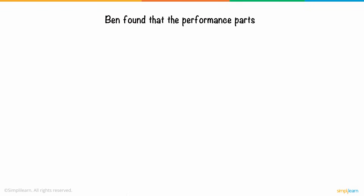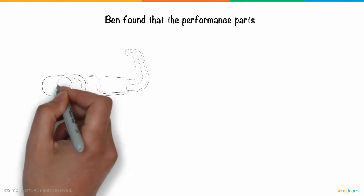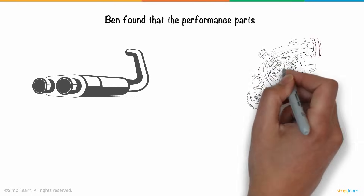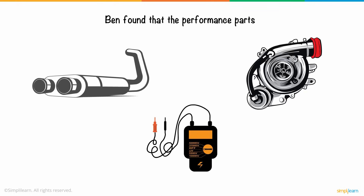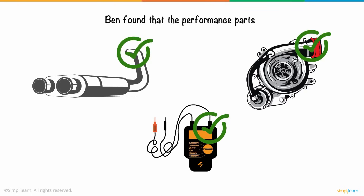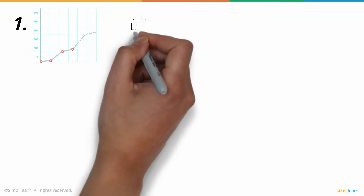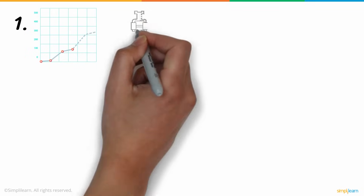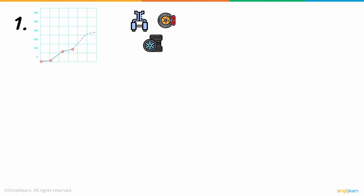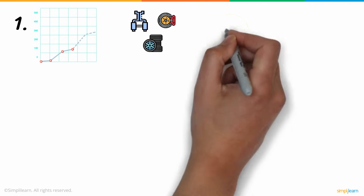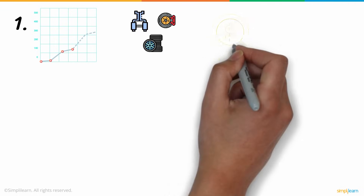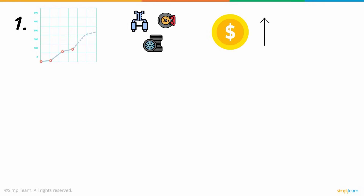Ben found that performance parts like sports exhaust, turbochargers, and engine management systems were selling well. With the Power BI Power View forecast feature, Ben identified the demand for performance products in the next quarter. He raised the prices on a few products that had peak demand and earned higher profits.